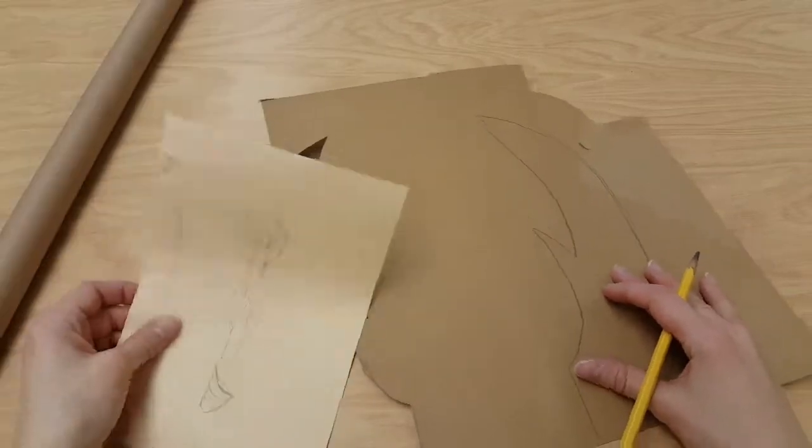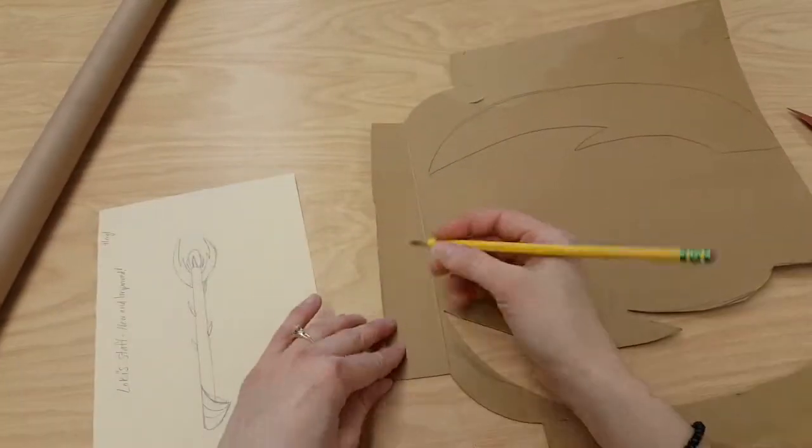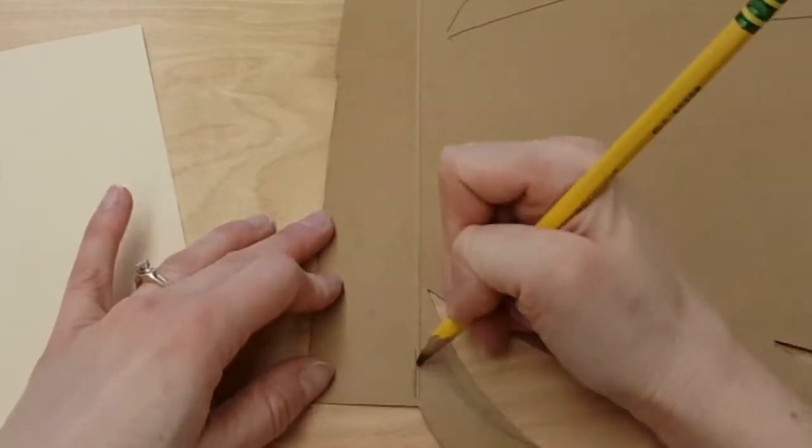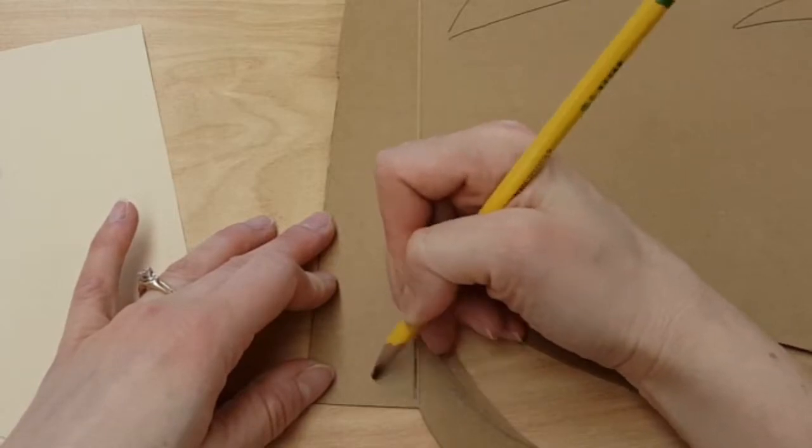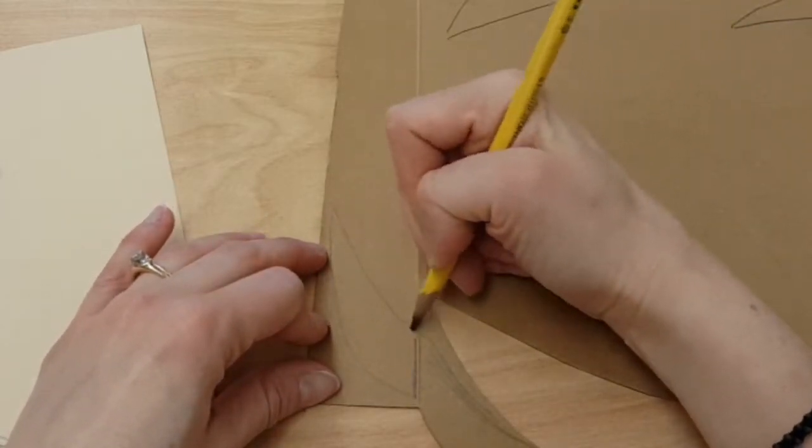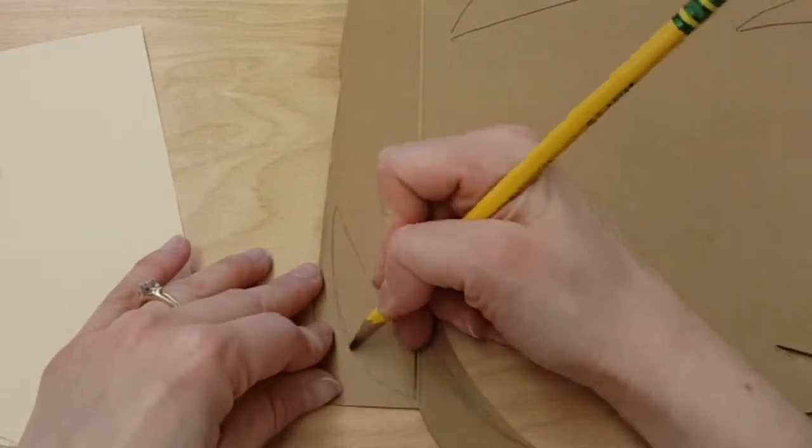Then I have lots of other smaller pieces on here, like little spikes to stick up. So I can use the same process. If I want all of them to be identical, I have to start with a flat line that touches, that will touch my tube. And then draw the object, and I can cut it and trace it as many times as I need that piece.